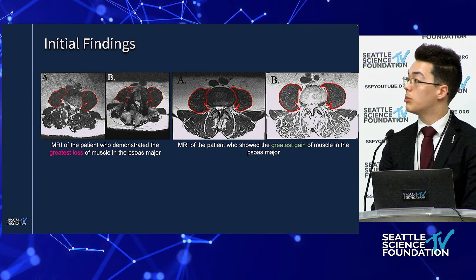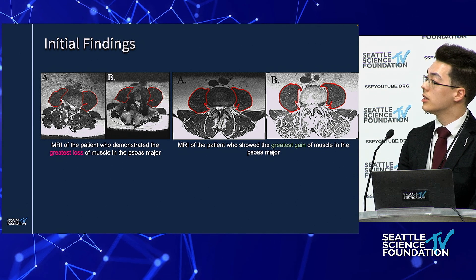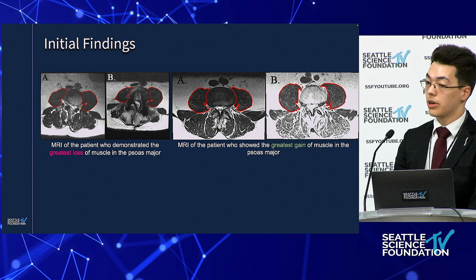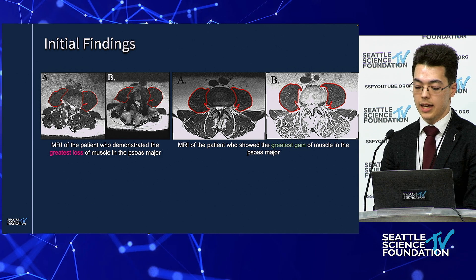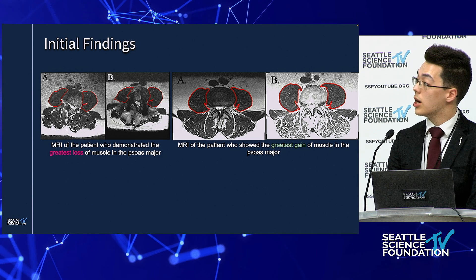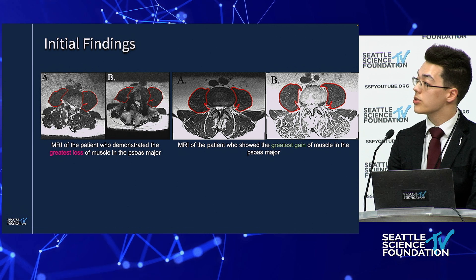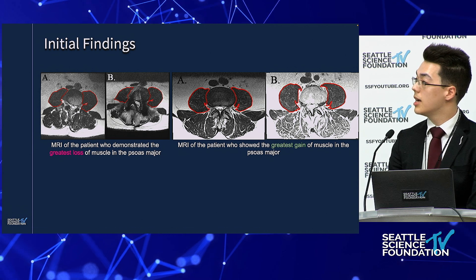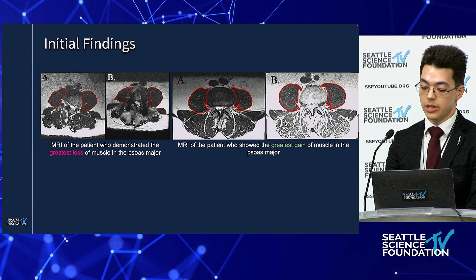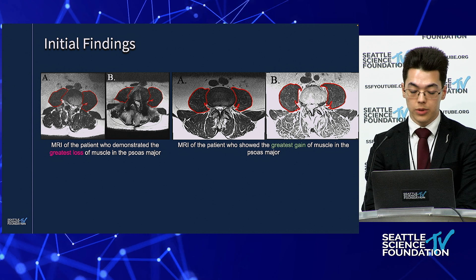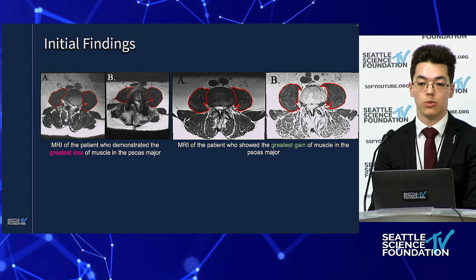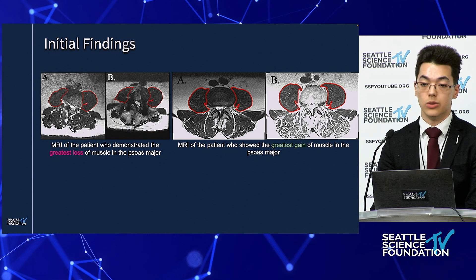Compare that to the gentleman on the right, also in his early 60s, who did very well — it was just an L1-2 with no posterior fixation. He actually gained about 20% on the surgery side and about 25% on the non-surgery side. So we see a lot of variation in terms of time course as well as how patients do.